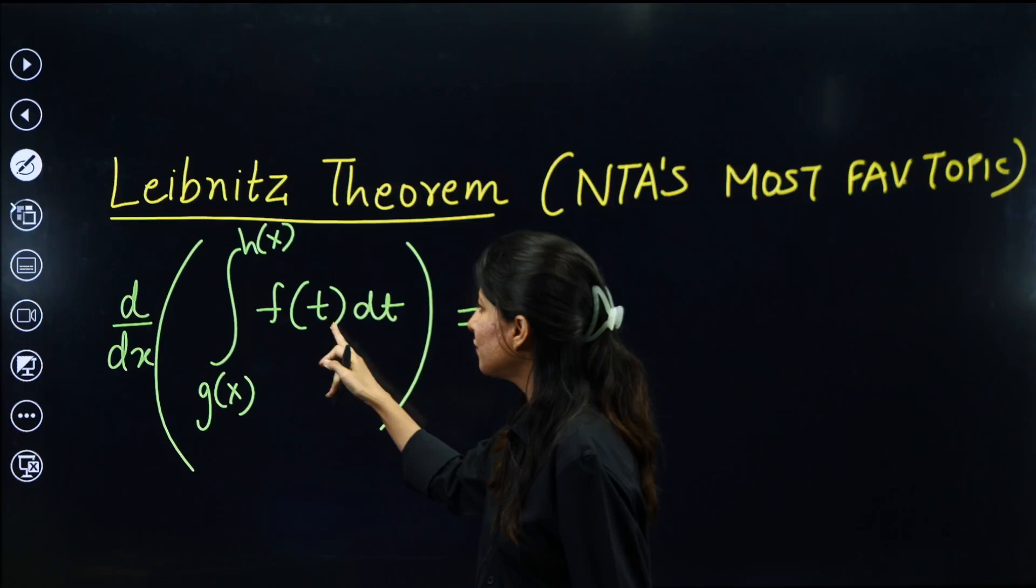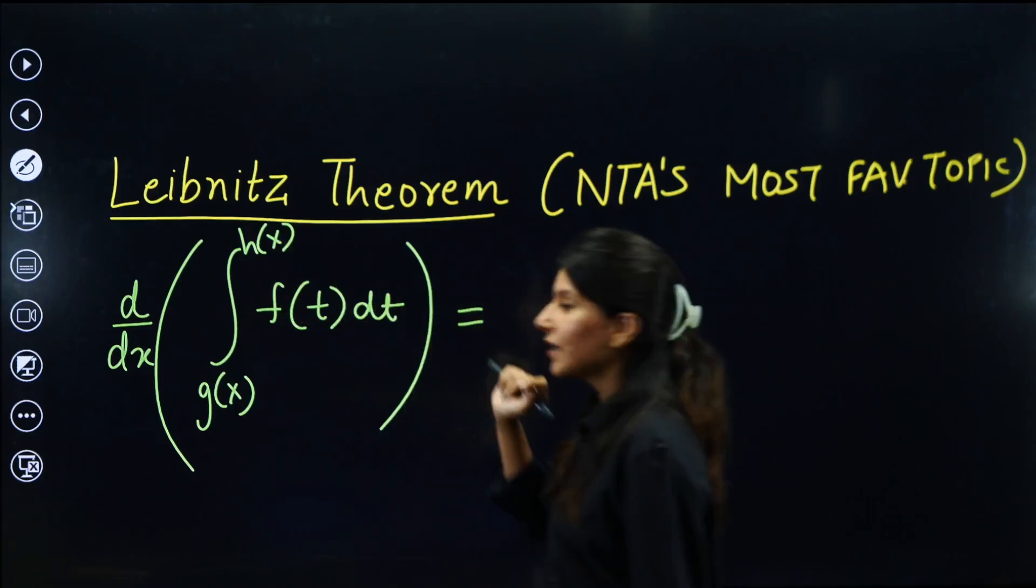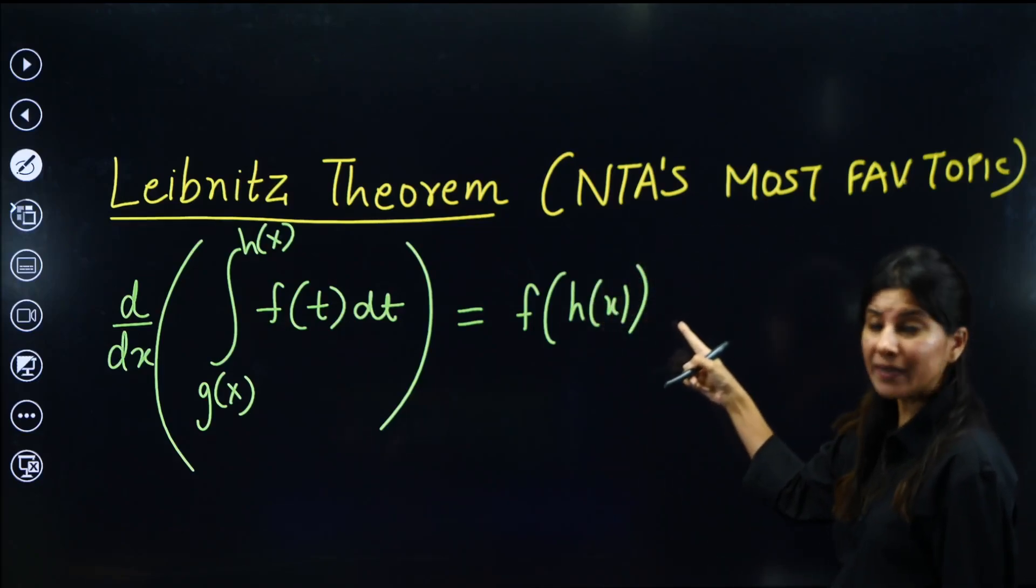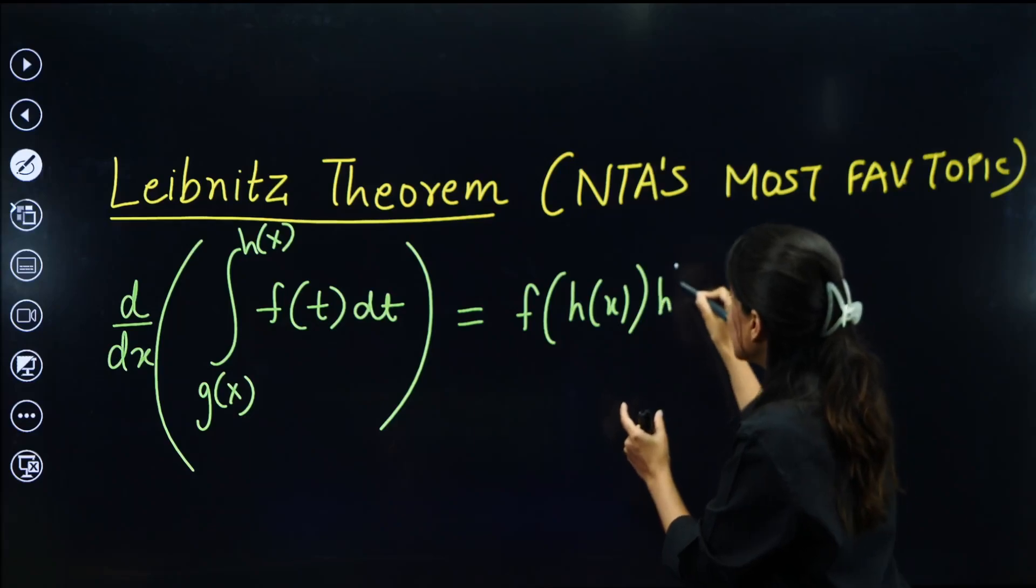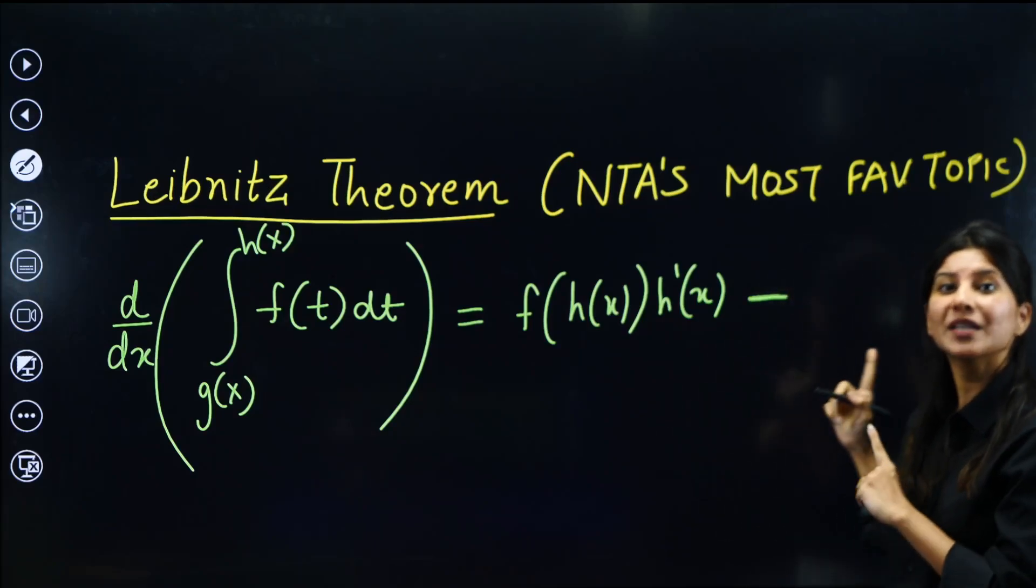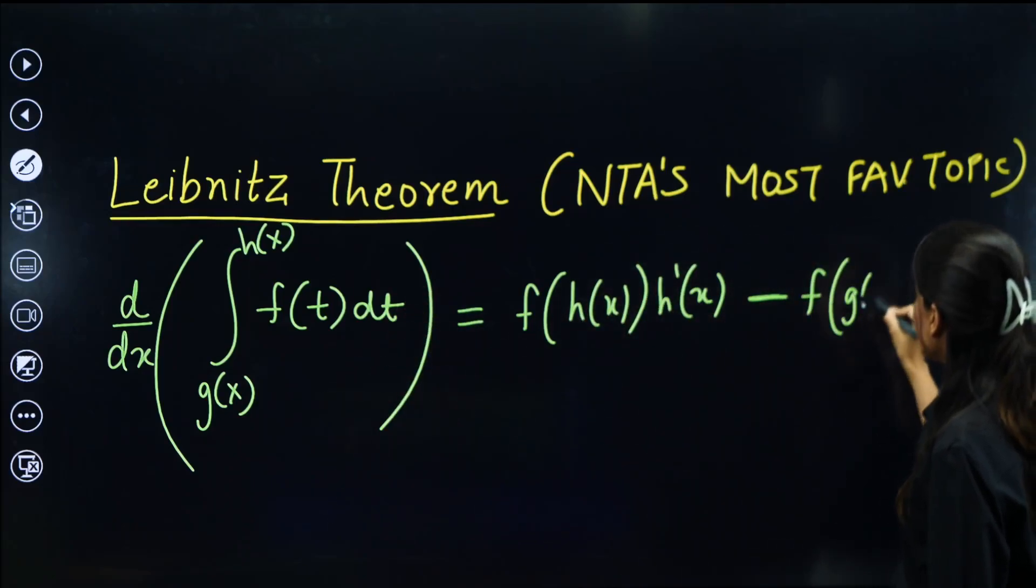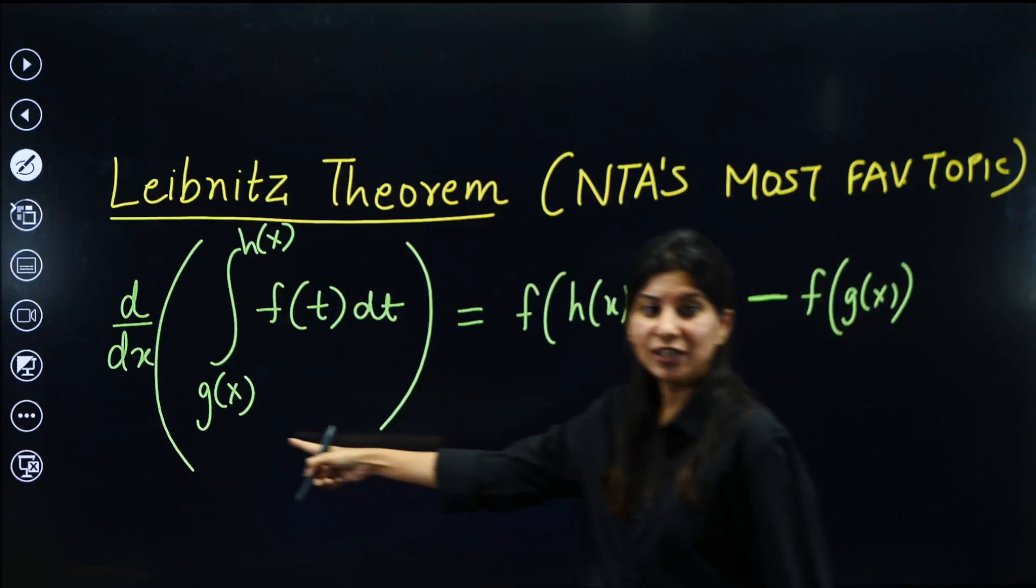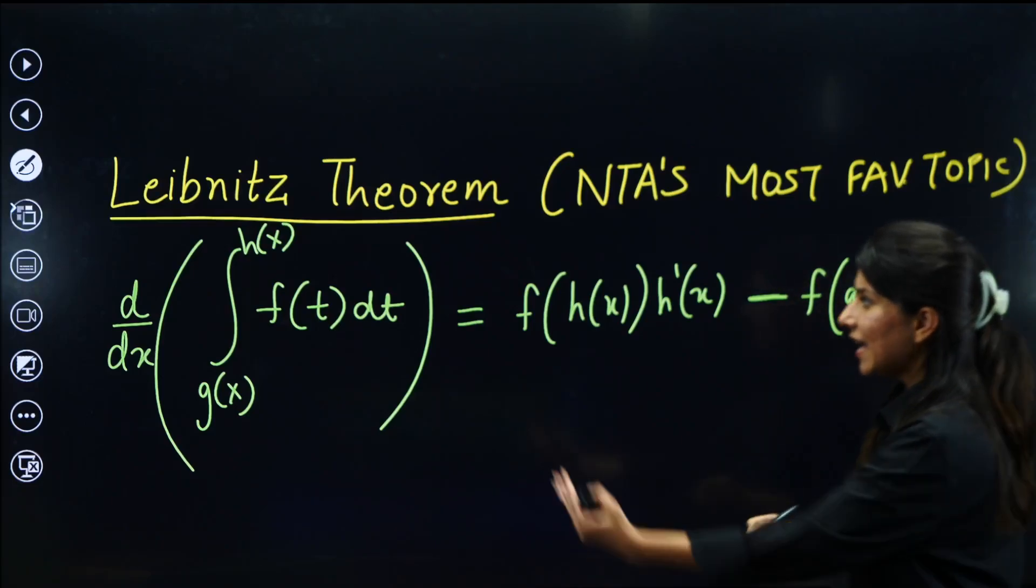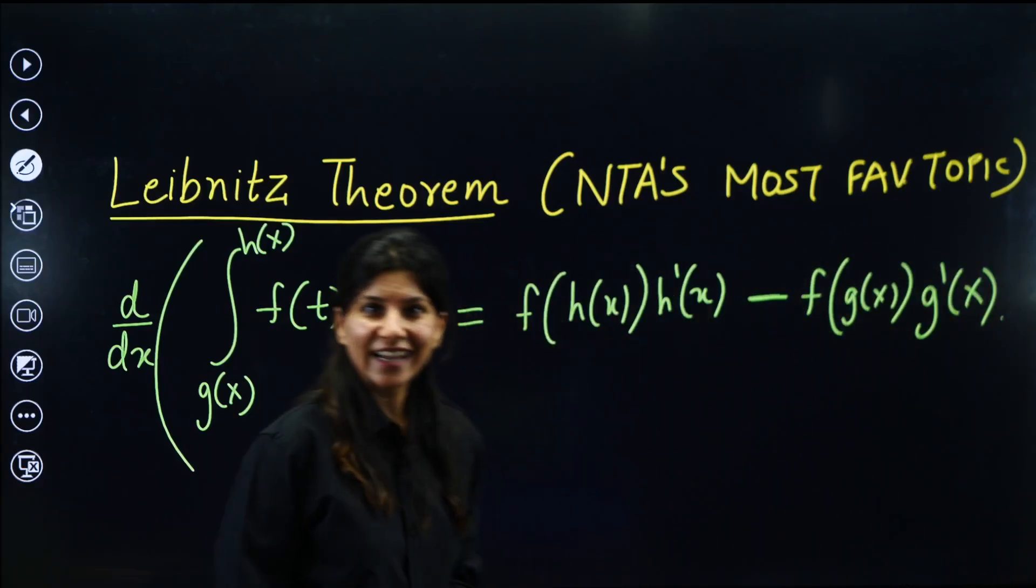We just have to follow some set of rules which I'll be writing on the right hand side. So this is f(t), right? The derivative will be equal to, now t will be replaced by the upper limit. So this will be f(h(x)). And now in multiplication, we have to differentiate h'(x). And minus, you are going to repeat the same thing with lower limit. t will be replaced by g(x). And we need to differentiate the lower limit, so g'(x). That's all. That's the derivative of integration of this quantity. This is your Leibniz theorem.